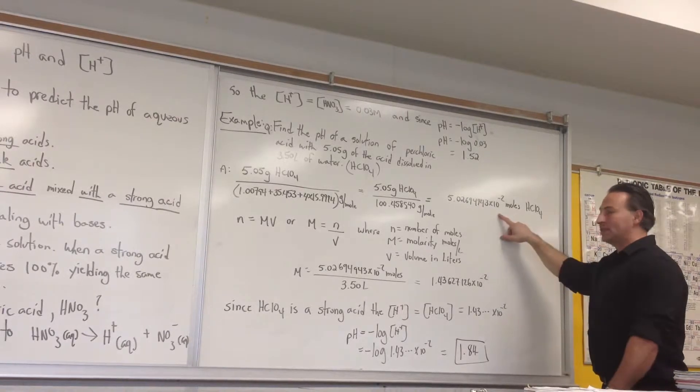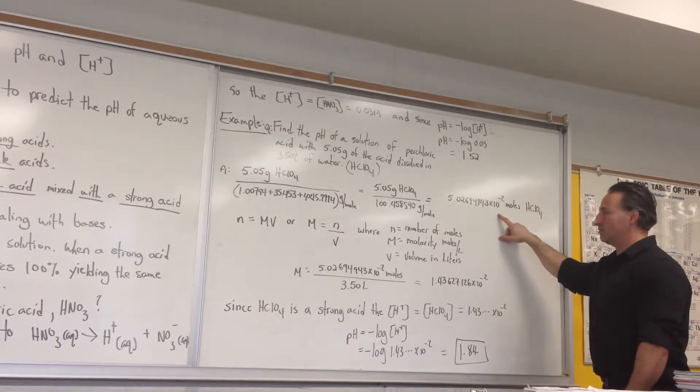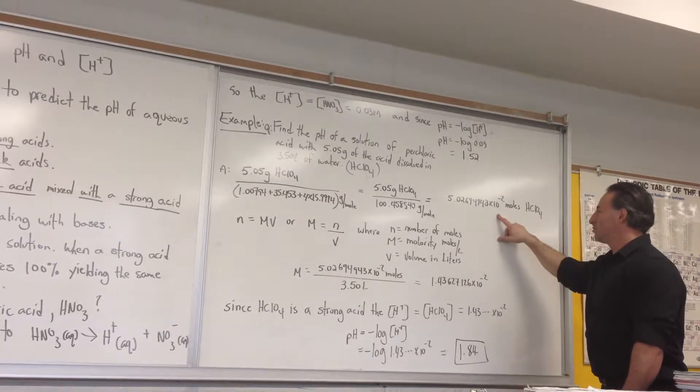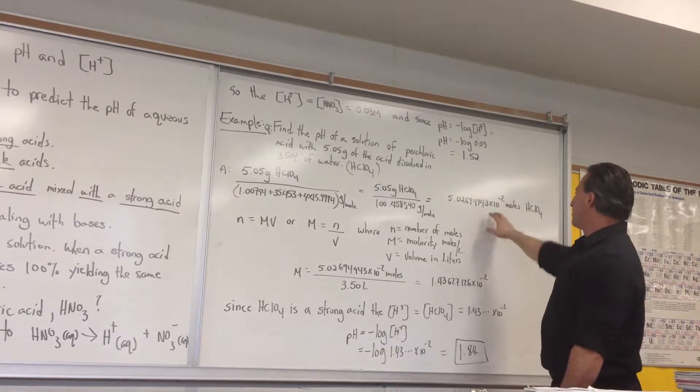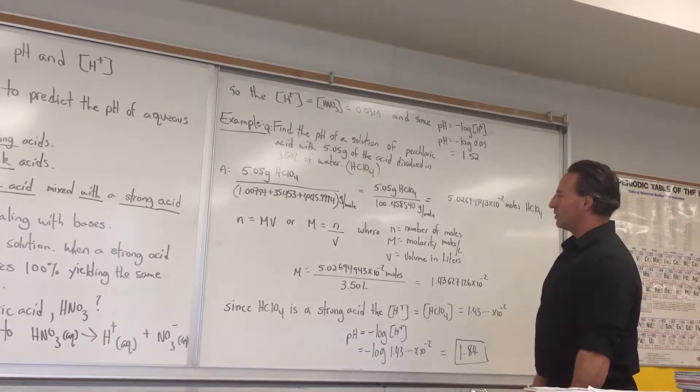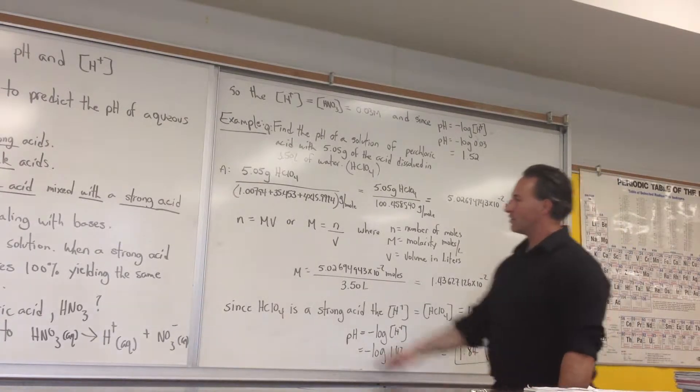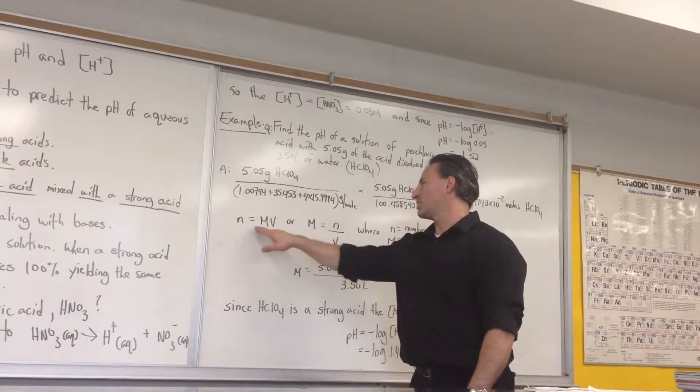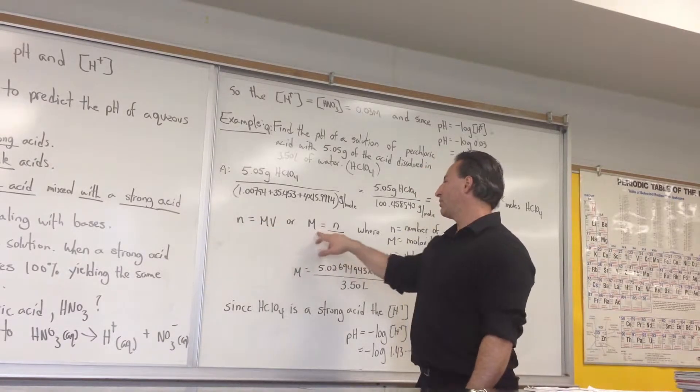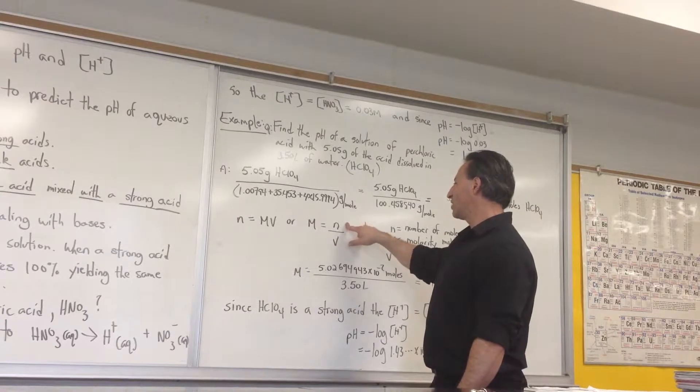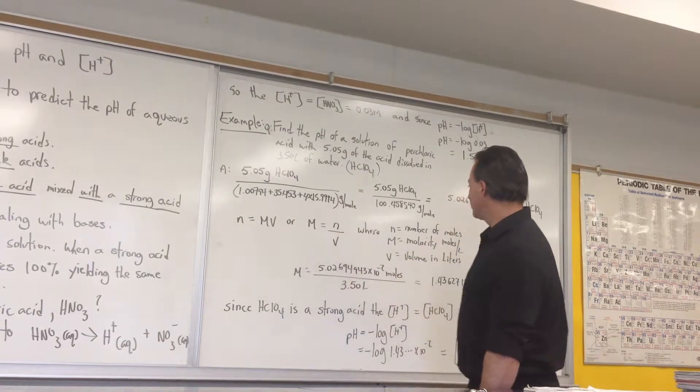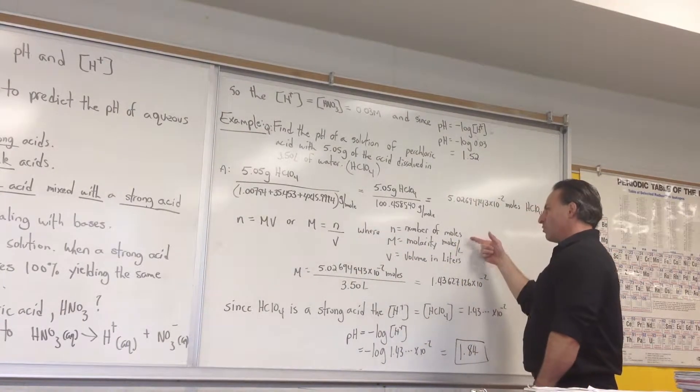Notice that I don't delete any decimal places so I don't introduce rounding error. From the moles of perchloric acid, I want to find the concentration. We recall that the number of moles N equals the molarity M times the volume V. Or if we rearrange the equation, the molarity is defined as the number of moles of solute over the volume of solution.